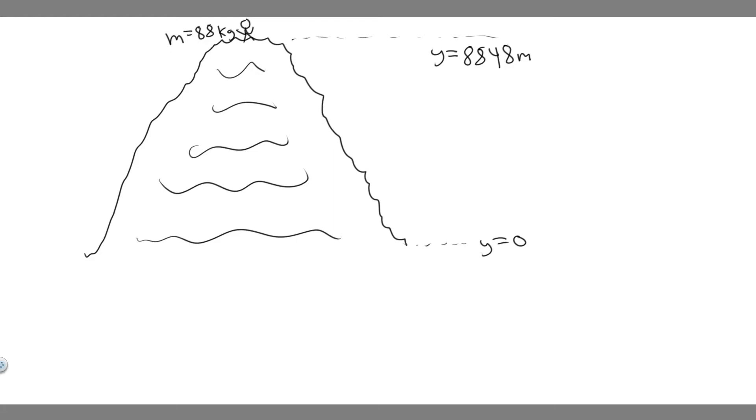In this problem, we're told to find the gravitational potential energy of an 88 kilogram person standing atop Mount Everest at an altitude of 8,848 meters. Use sea level as the location for y equals zero.